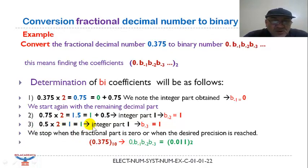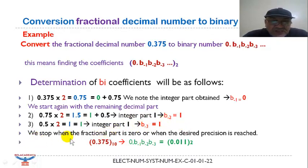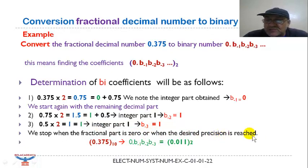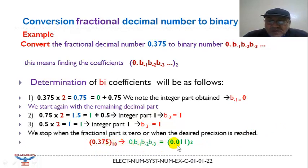For the third part, we take this fractional number and multiply it by 2; it gives 1 with no fractional remainder, so the fractional part is 0 and this is the last operation. B minus 3 is equal to 1. We stop the process when the fractional part is 0 or when the desired precision is reached. So 0.375 in decimal base is equal to 0.011 in binary system.